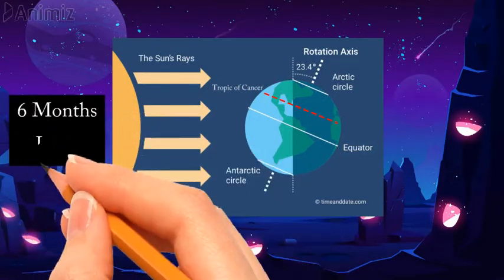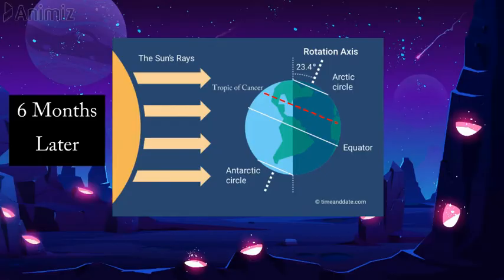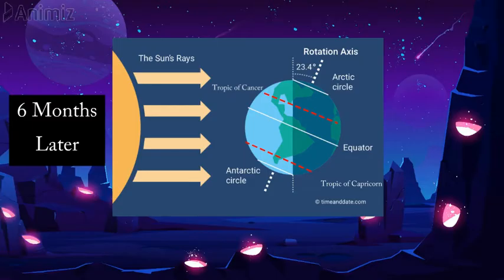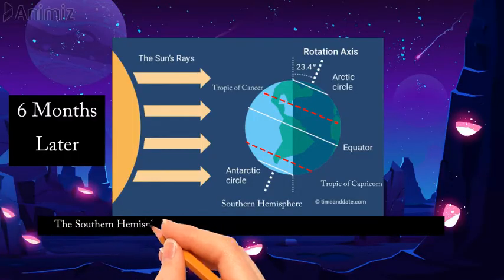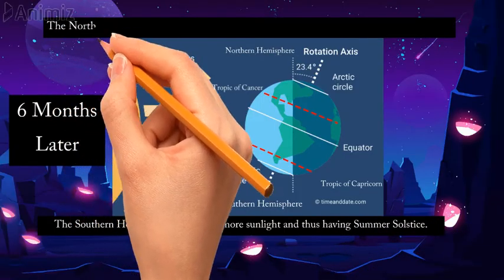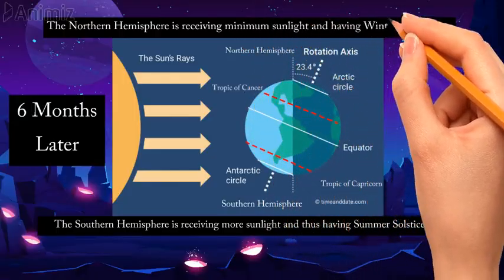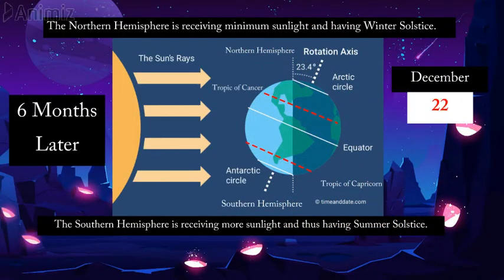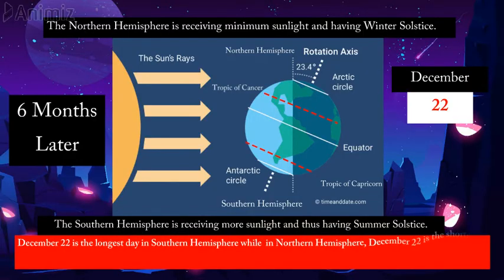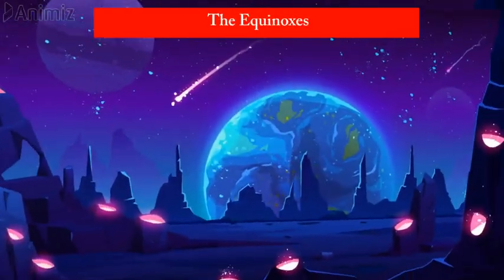At the next position of the earth, which comes six months later, the sun is now overhead and falling directly on the Tropic of Capricorn. It happens opposite to the previous scenario: the southern hemisphere is now receiving more sunlight and thus experiencing summer solstice, while the northern hemisphere is receiving minimum sunlight and experiencing winter solstice. Both occur on December 22nd. Therefore, December 22nd is the longest day in the southern hemisphere and the shortest day of the year in the northern hemisphere.